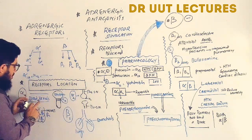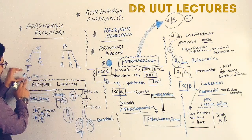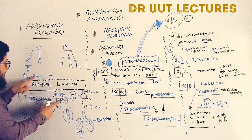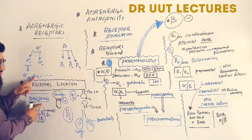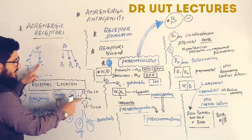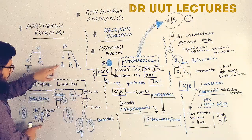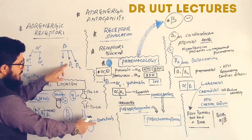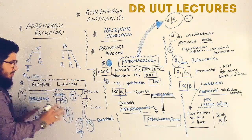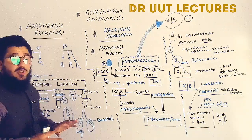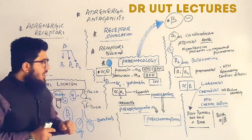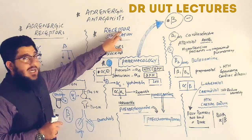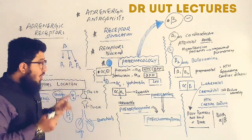Alpha-1a receptors are located in the sphincter, and alpha-1b receptors are located in the blood vessels. Alpha-2 receptors are present on the presynaptic neuron. Beta-1 receptors are present on the heart, and beta-2 receptors are present in the bronchioles of the lungs. Beta-3 receptors are present in the adipose tissues.